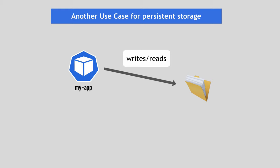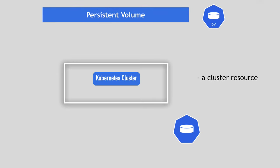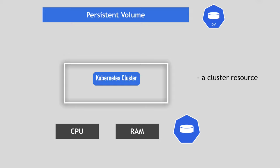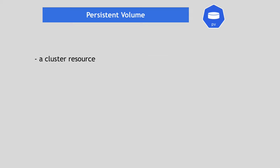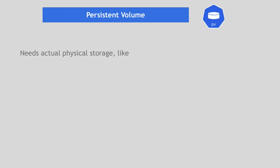You can configure any of these storage types using the Kubernetes component called persistent volume. Think of a persistent volume as a cluster resource, just like RAM or CPU, that is used to store data. Persistent volume, just like any other component, gets created using a Kubernetes YAML file where you can specify the kind as persistent volume. In the specification section, you have to define different parameters, like how much storage should be created for the volume.